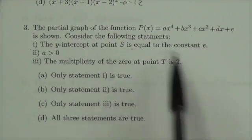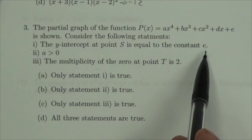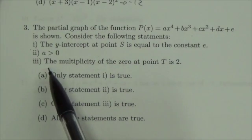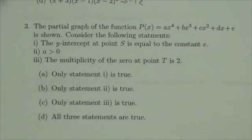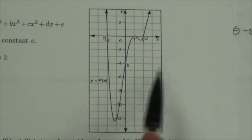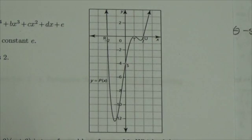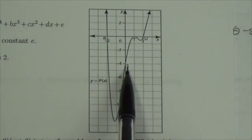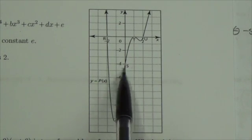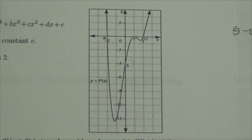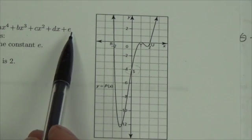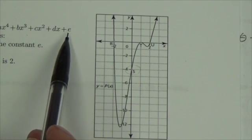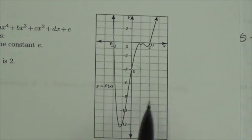Statement one: the y-intercept at point s is equal to the constant e. Let's take a look at that. That's true, because the constant term in the function corresponds to the y-intercept. So yes, that's true.